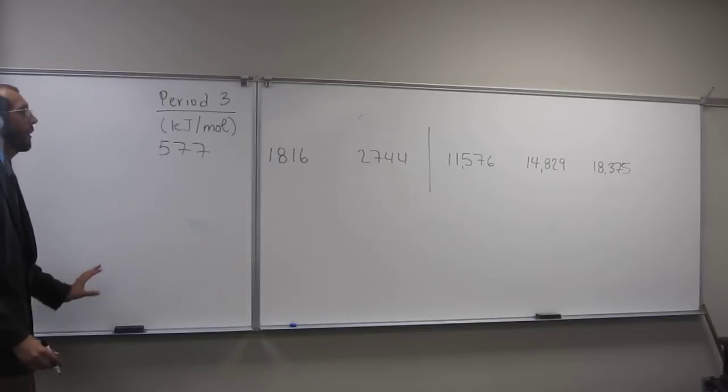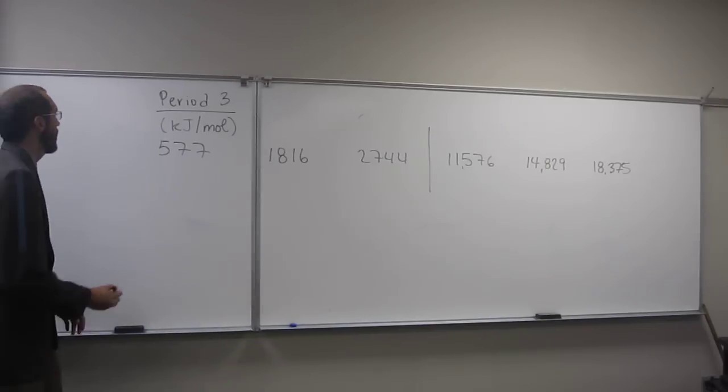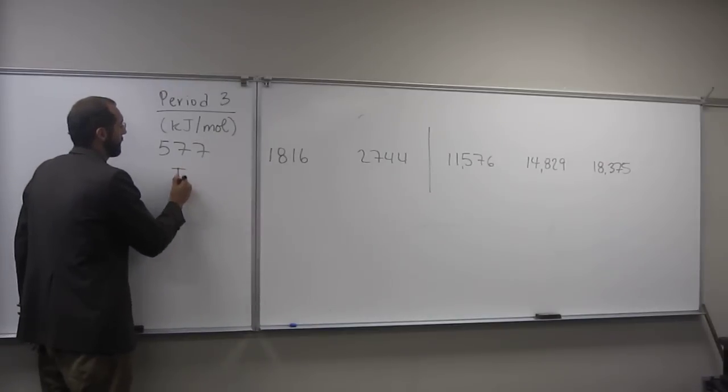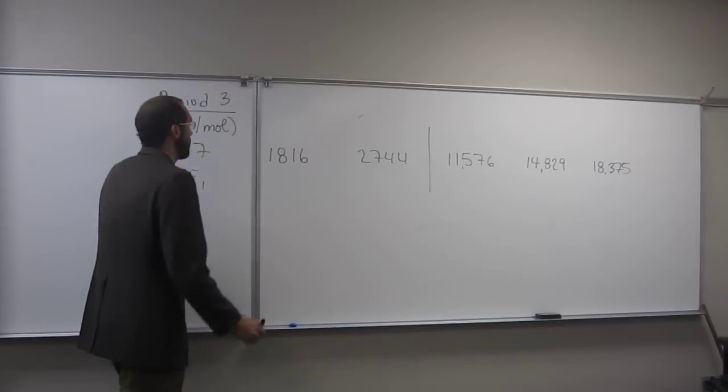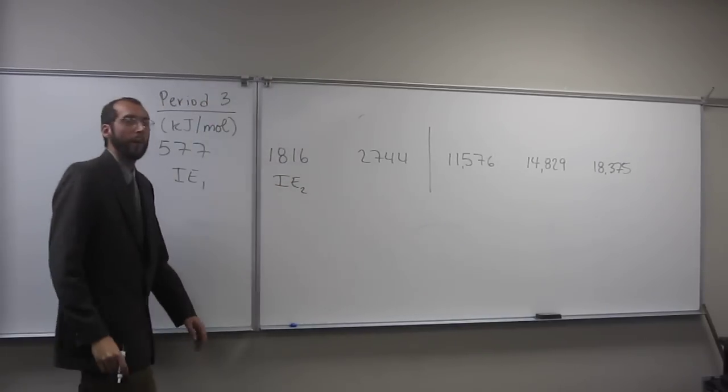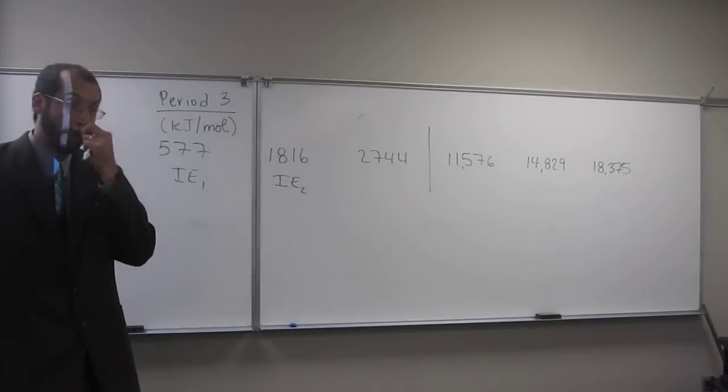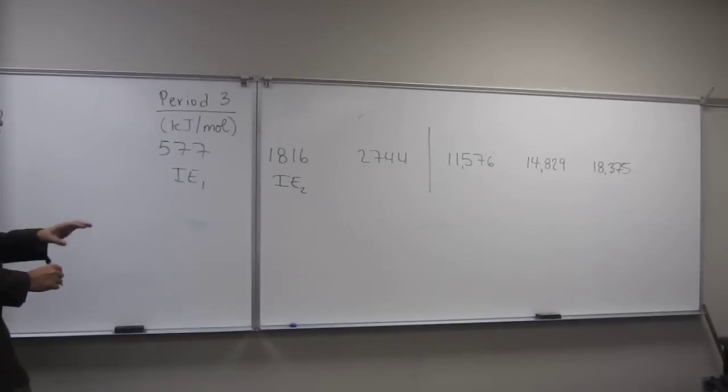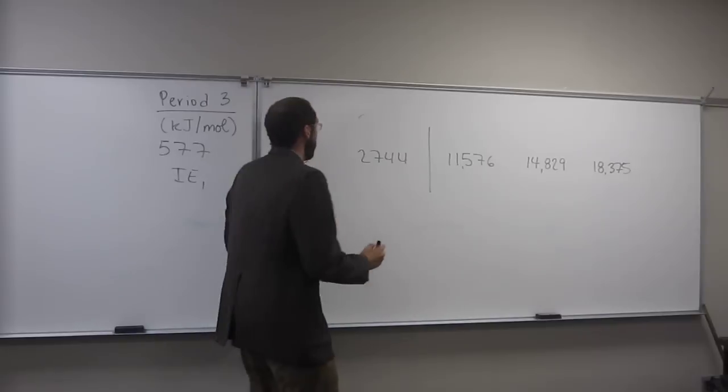And now we'll say, which ionization energy is that big jump in between? So this is the first ionization energy. This is the second ionization energy. So remember what ionization energy is. It's removing an electron. So this is how much it takes to remove the first one, second one, third one.